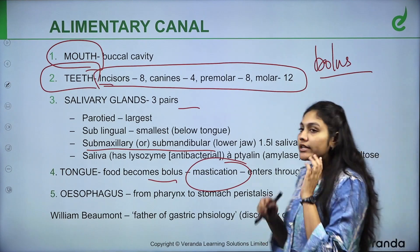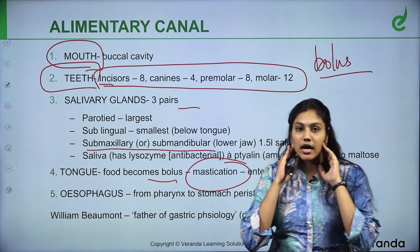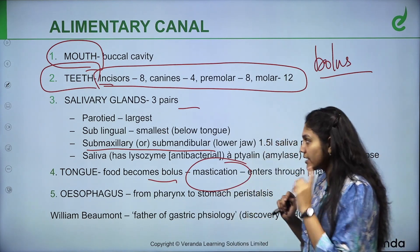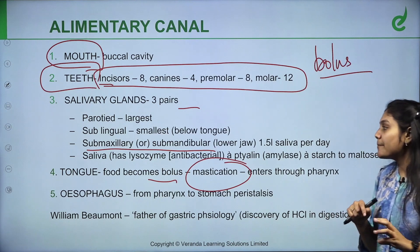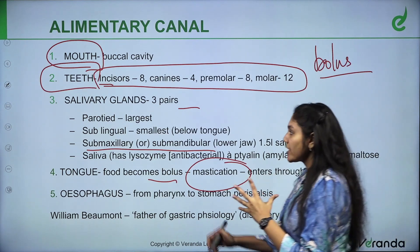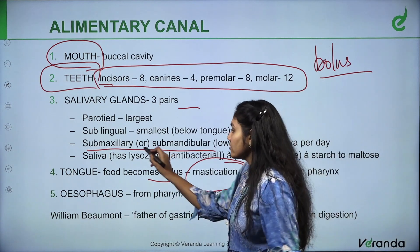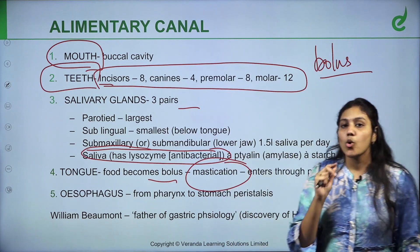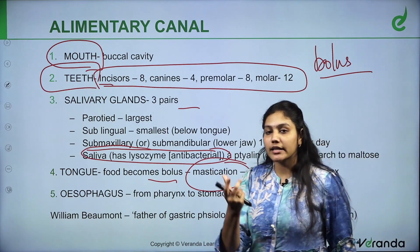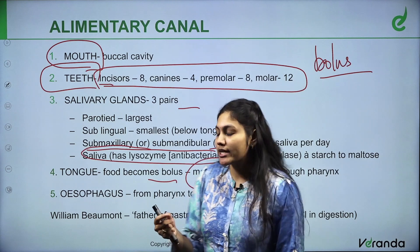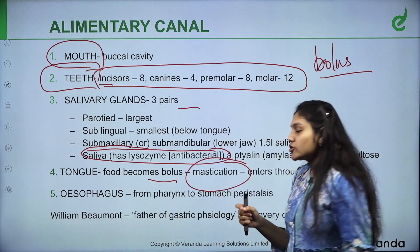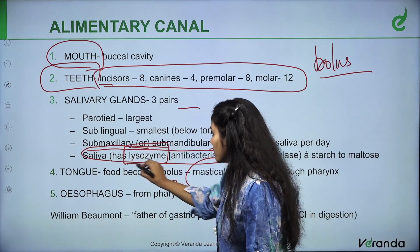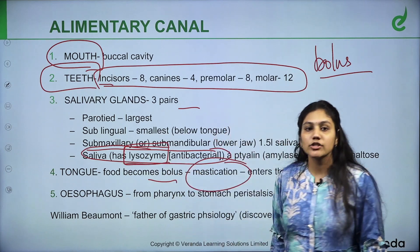So, parotid glands are the largest gland. We can sense it here — it's the parotid gland. Submaxillary and sublingual glands are also present. Basically, their function is to produce saliva. Saliva is synthesized. In the saliva, there is an antibacterial chemical which is called lysozyme. Lysozyme has antibacterial activity — it provides a layer of protection.